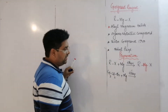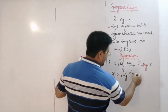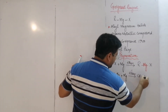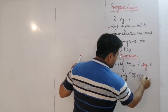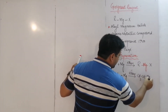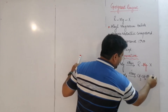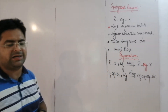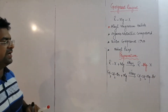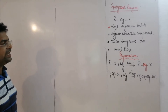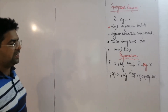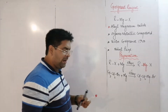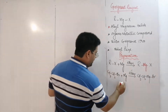For example, if we react ethyl bromide with magnesium metal using ether as a solvent, the product formed is ethyl magnesium bromide, which is called the Grignard Reagent and is an organometallic compound.